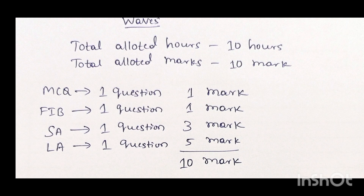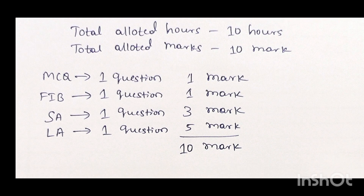That carries one mark. You are also going to get one FIB question — FIB means fill in the blank — which carries one mark, and one SA type question — SA means short answer — which carries three marks, and one long answer question, which is called LA type, for which you get five marks. Adding these up, you get ten marks total.